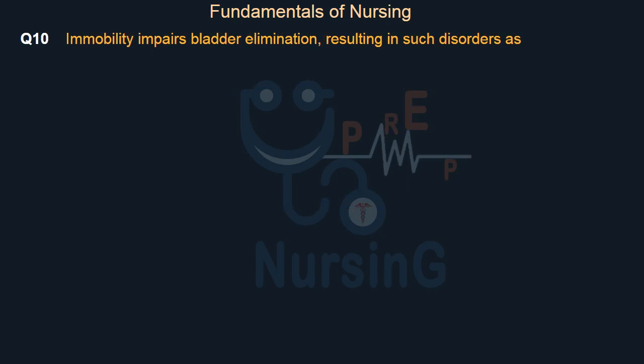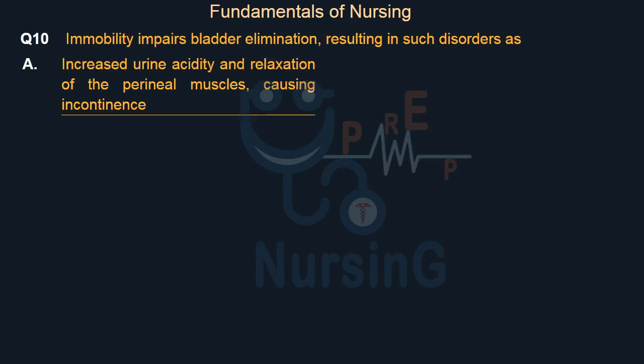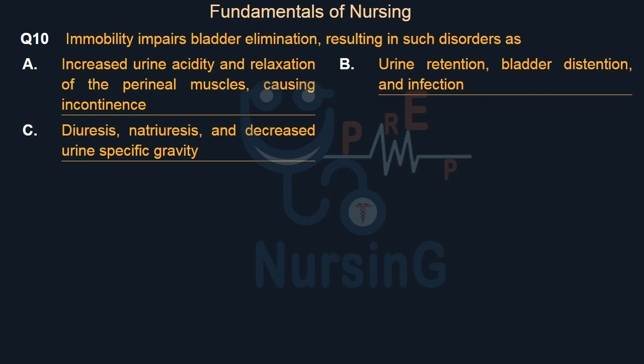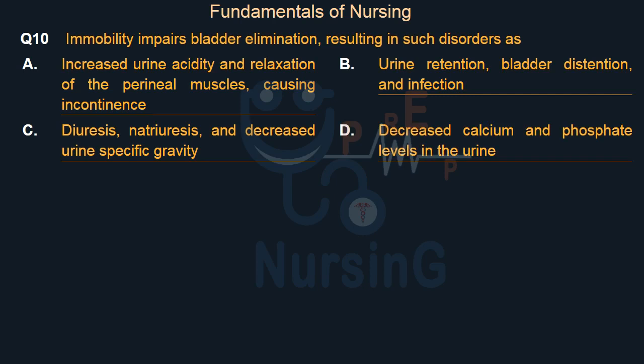Immobility impairs bladder elimination, resulting in such disorders as: Option A: Increased urine acidity and relaxation of the perineal muscles causing incontinence. Option B: Urine retention, bladder distension, and infection. Option C: Diuresis, natriuresis, and decreased urine-specific gravity. Option D: Decreased calcium and phosphate levels in the urine. Right answer is Option B.